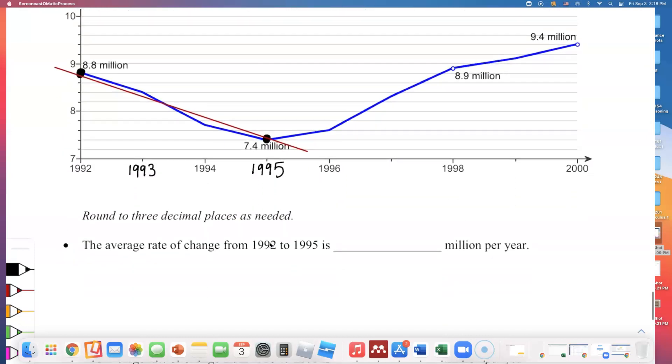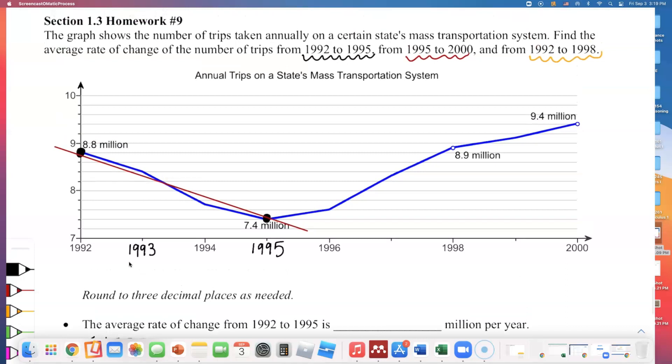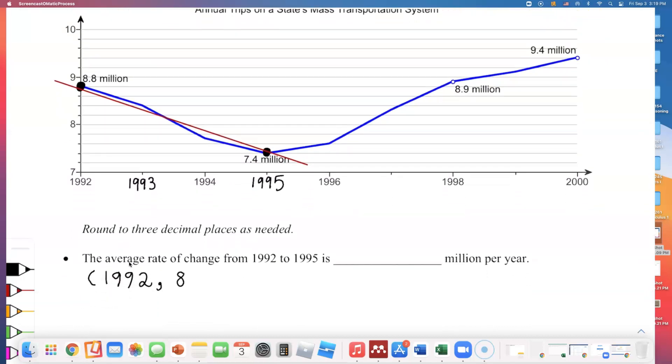I like to write down ordered pairs. I like to write down my input variable. In 1992, the number of trips taken on a certain state's mass transportation system was 8.8 million. The unit is in millions, so I'll just keep it that way. And the second point is 1995, and the trip taken was less than that. We're expecting to get a negative slope because the line was going down from left to right.